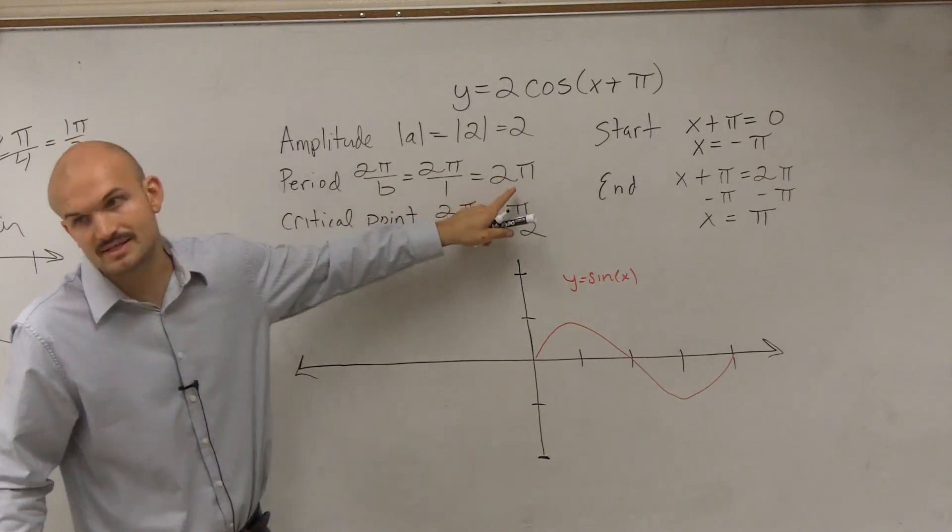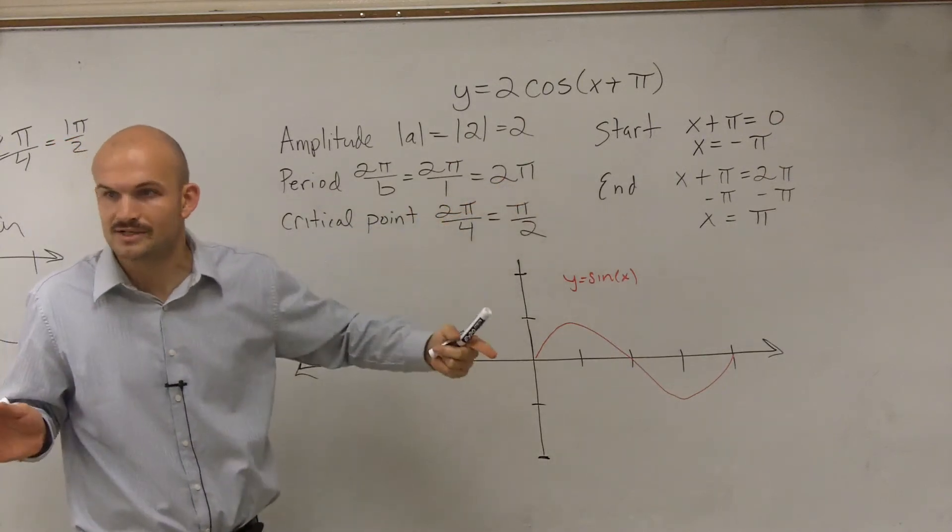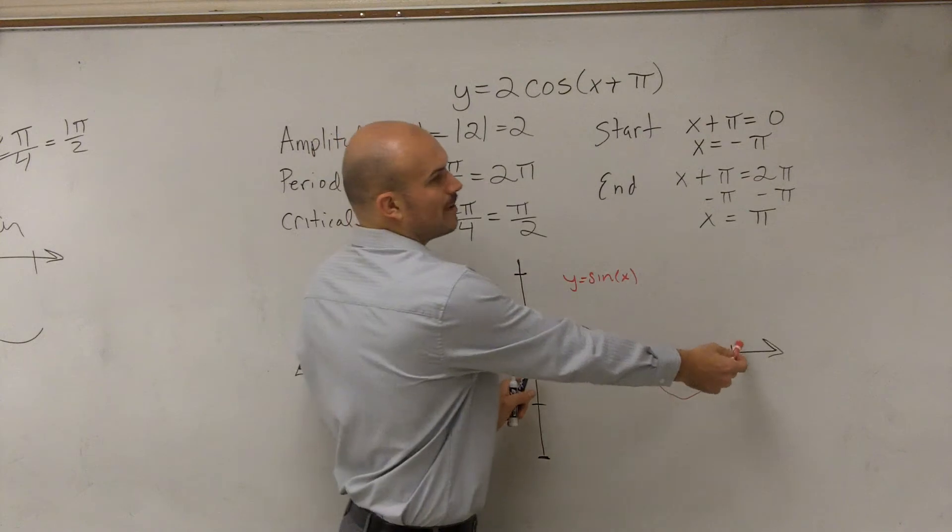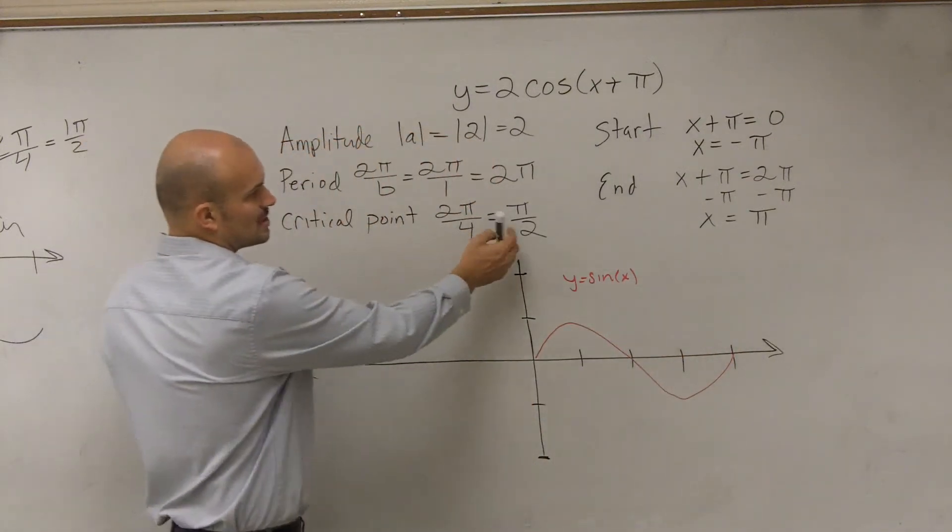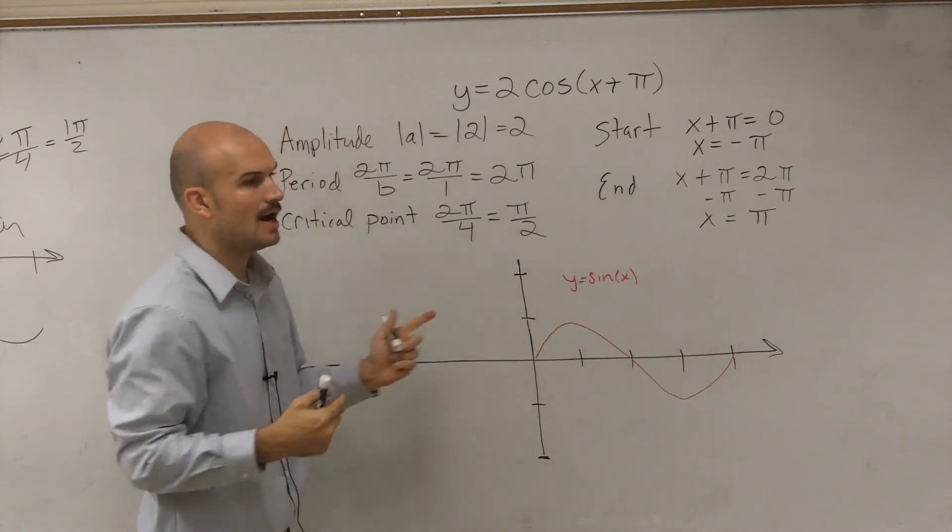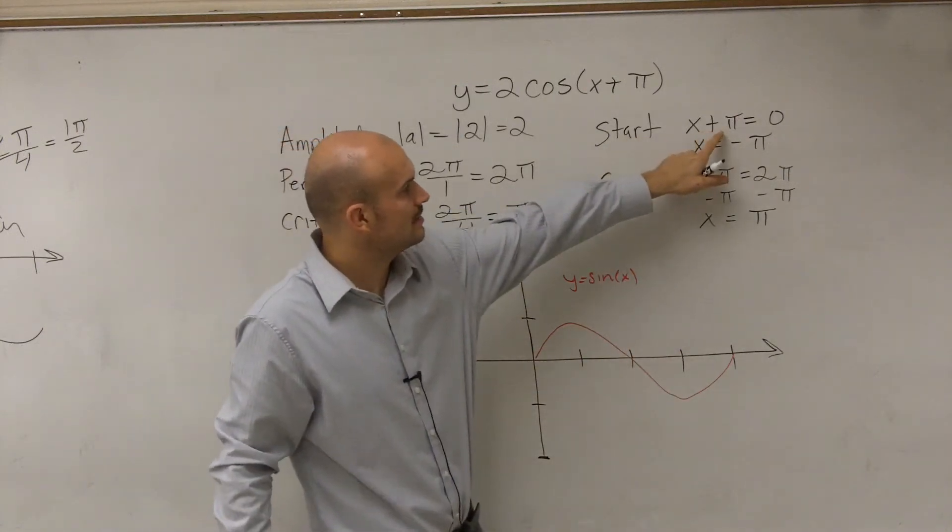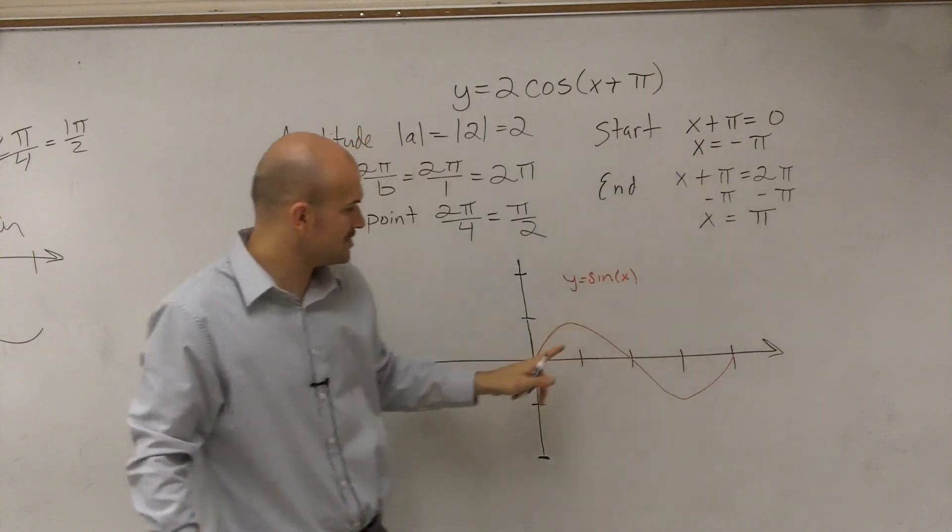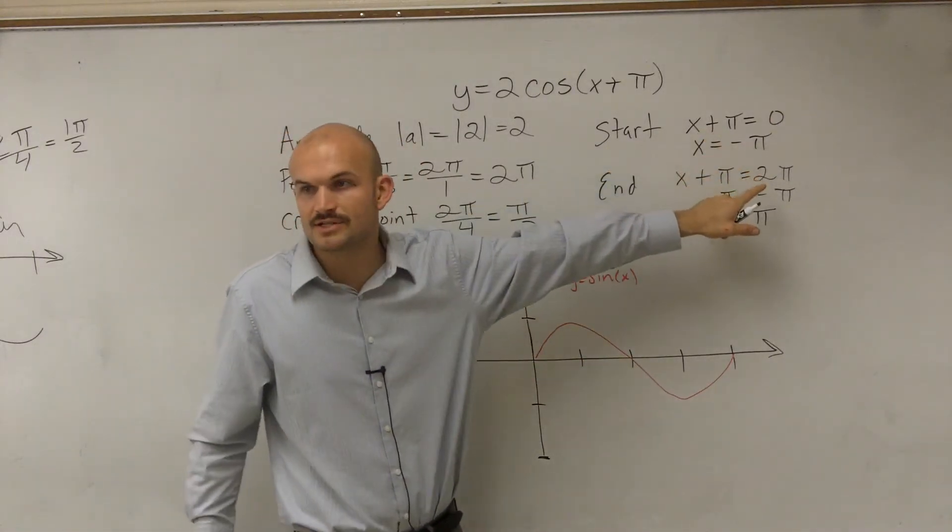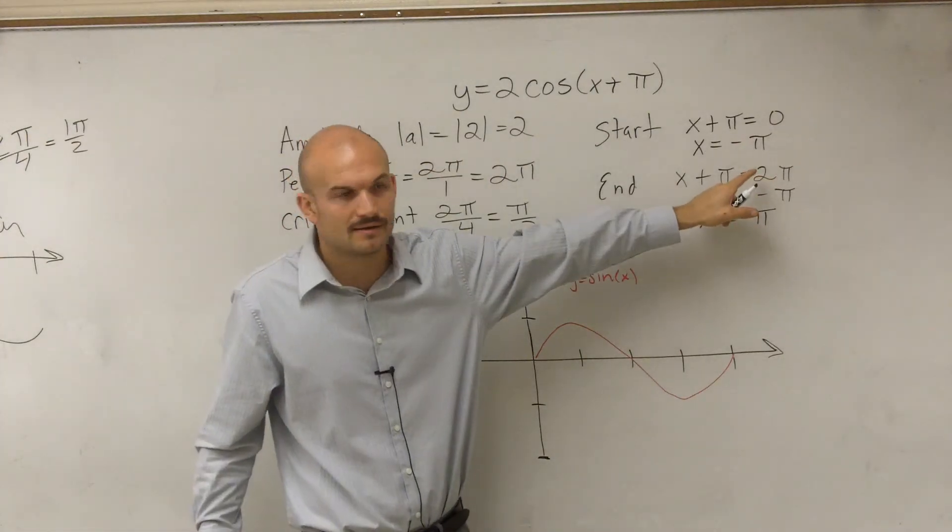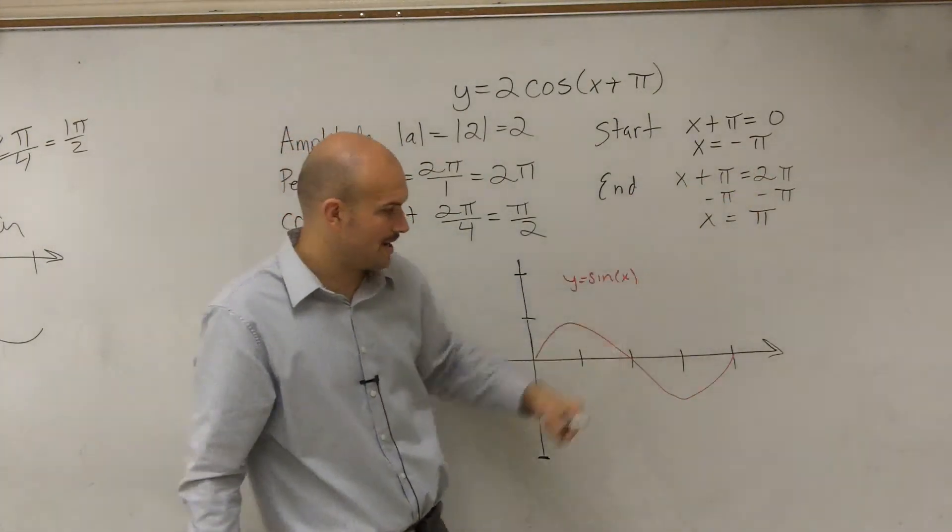My period is going to remain the distance of 2π. That has not changed. It's going to take a distance of 2π for this graph to complete a cycle. My critical points are still going to be π/2 between each other. However, my start point, rather than starting my first period at 0, I'm now going to have my first period start at negative π. And my end point is now going to end at π.